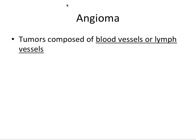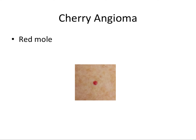Next we're going to talk about angiomas. Breaking the word down: 'angi' is a prefix meaning vessels and 'oma' is a suffix meaning a tumor — so literally a tumor composed of blood vessels or lymph vessels. A cherry angioma is extremely common and super benign. Most of us have them somewhere; it's basically a red mole — a small tumor of capillaries and blood vessels that accumulate to form a small mole on the skin.